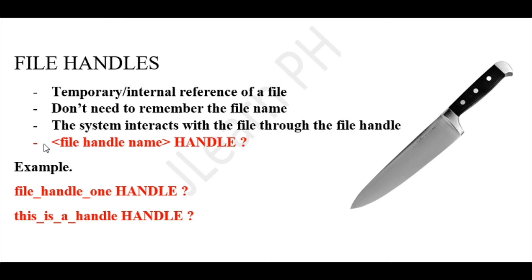The syntax for declaring a file handle in MASM32 assembly is: the file handle name, then the keyword HANDLE (capital H-A-N-D-L-E), followed by a question mark. For example: 'file_handle_one HANDLE ?' — this declares a handle named file_handle_one.